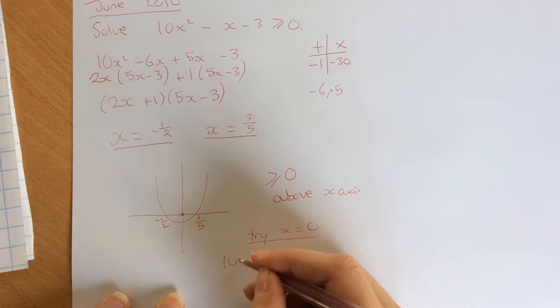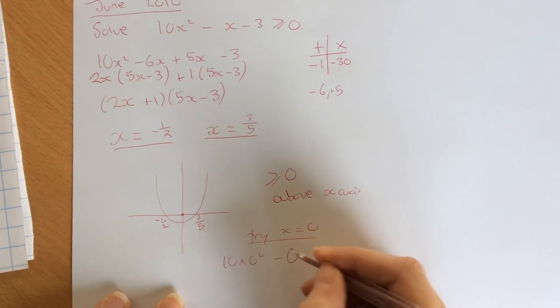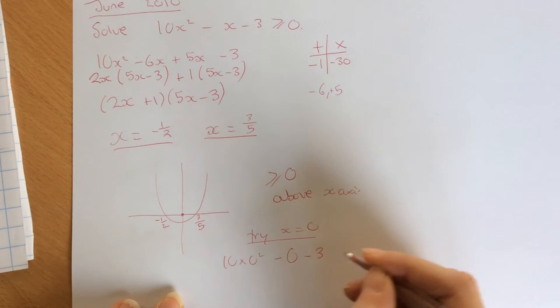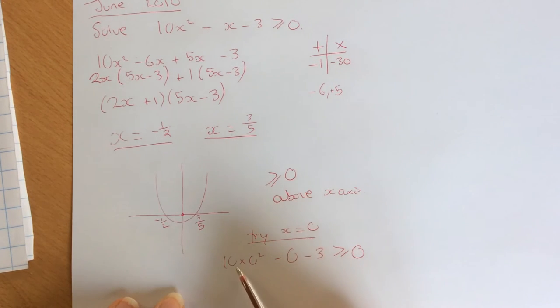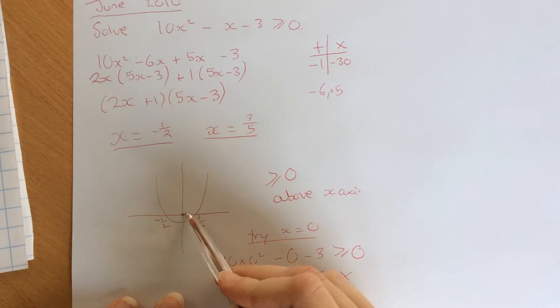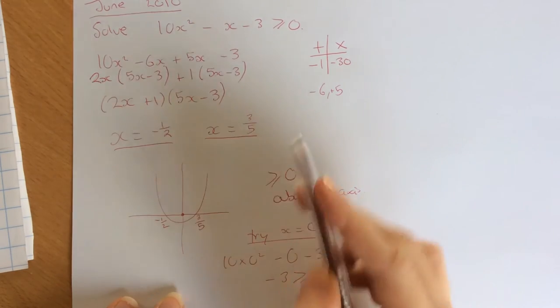I'm going to put x is 0 into the equation up here, so I get 10 times 0 squared, minus 0, minus 3, and that should be greater than or equal to 0. So I'm going to end up with 0, minus 0, minus 3, is greater than or equal to 0. Now I know that is not correct, that doesn't work. So this inside area is not the correct part.